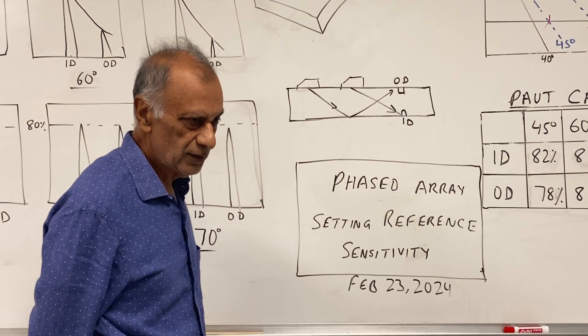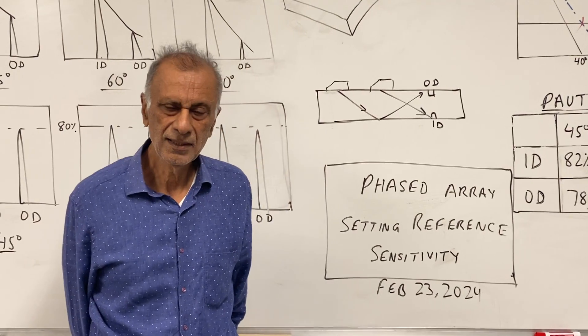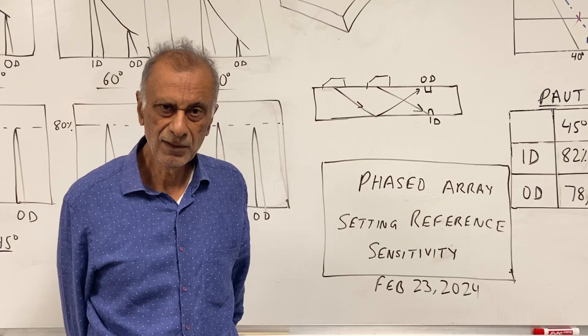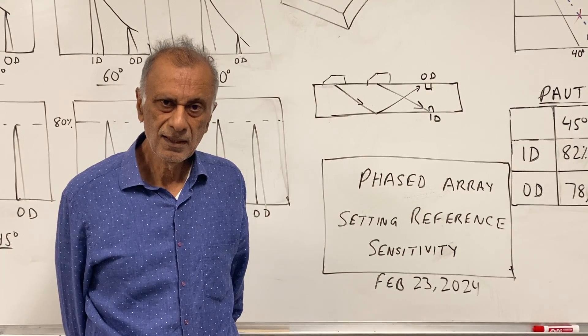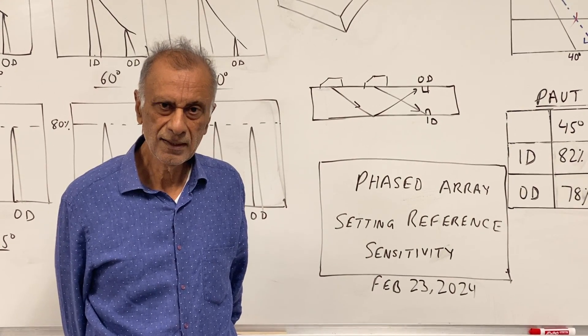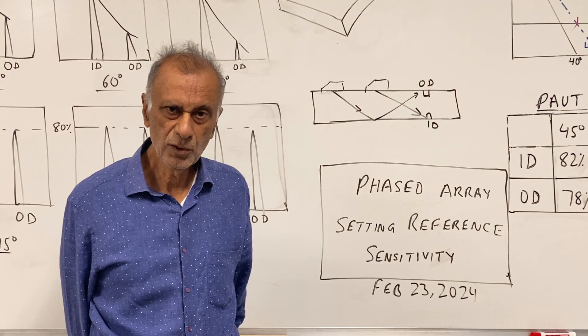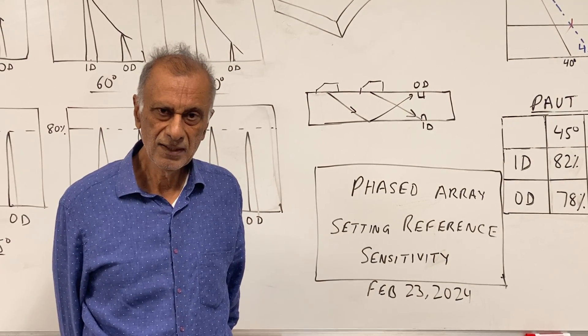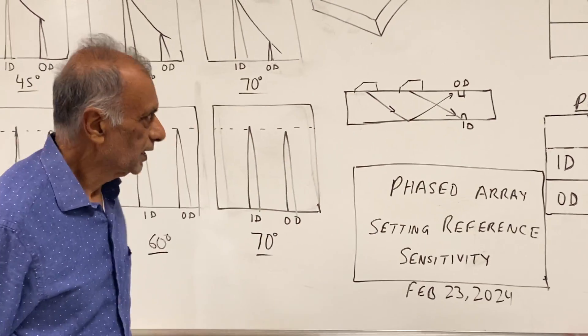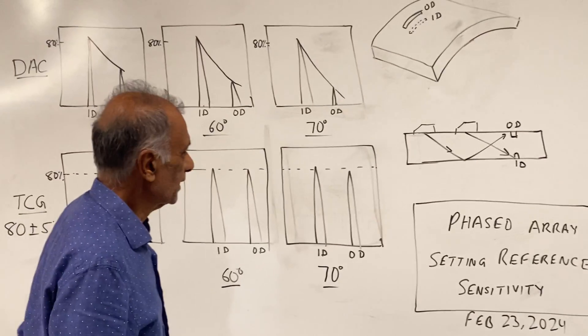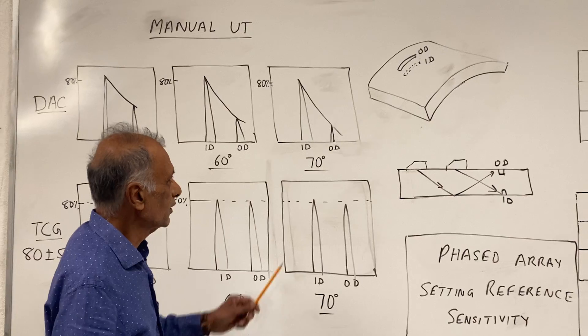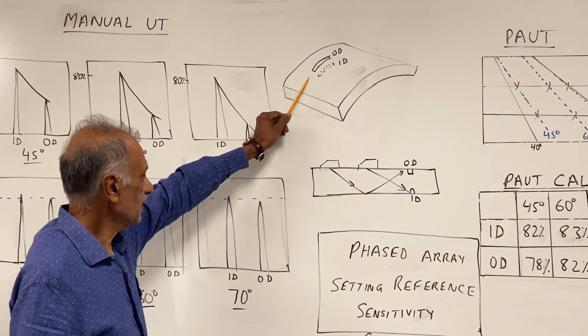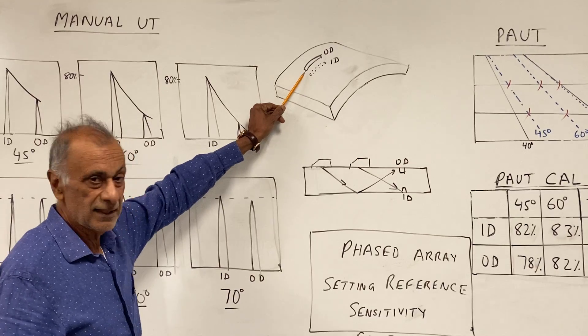Before we delve into this topic, I need to give you a brief background on how it is done for manual UT, which is basically conventional ultrasonic testing using single probes which are 45 degrees, 60 degrees, and 70 degrees. First, let's see the calibration block for piping. The calibration block is a curved block and it has OD and ID notches.